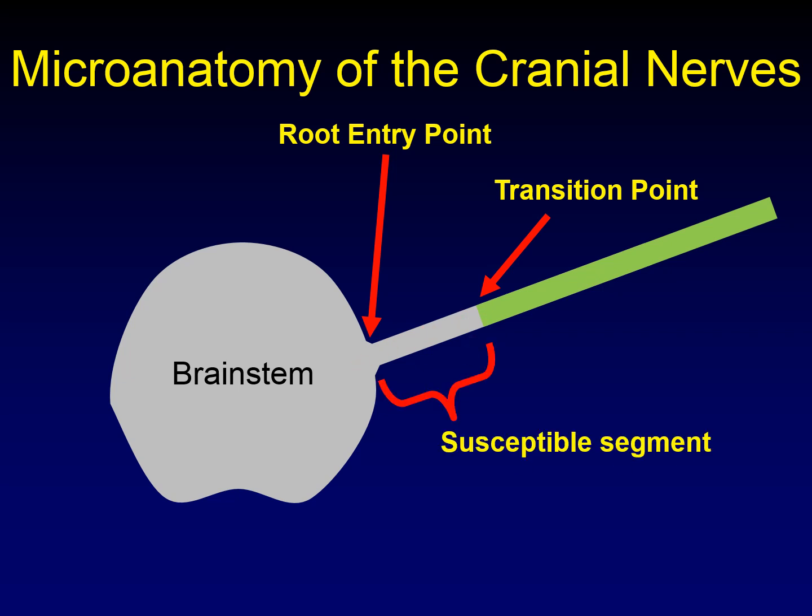What this means is there is a segment of the peripheral nerve — the cranial nerve — that still has myelin created by oligodendrocytes, and that's called the susceptible segment. This actually explains a lot, including why multiple sclerosis can affect the cranial nerves near the brain stem, because there is a section that's still, strictly speaking, CNS as part of what looks like the PNS.